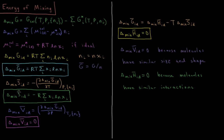This is why things very much prefer to be mixed rather than isolated: mixing always produces a large entropy gain, and that entropy gain causes the Gibbs energy to decrease. So thermodynamically, substances always prefer to mix and spread out through solutions rather than remain isolated from one another.